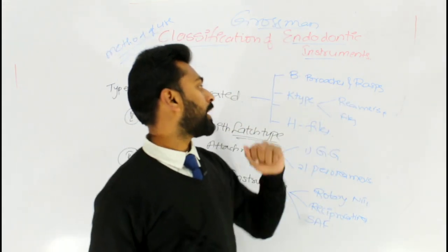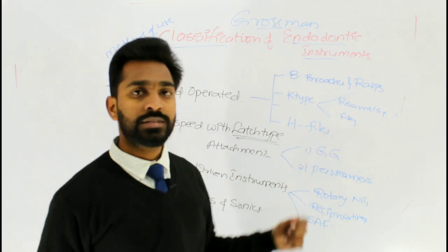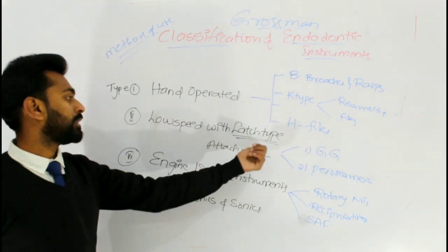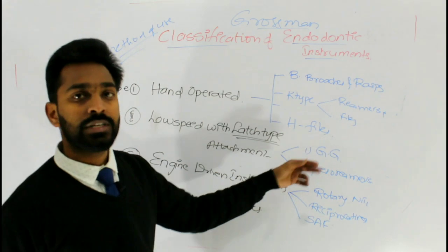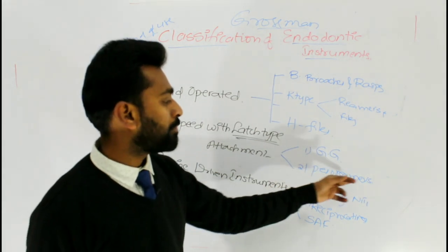You can see barbed broaches and rasps, K-type reamers and files, and H-files. Coming to the low-speed with latch-type attachment, you have GG drills or Gates-Glidden drills and Peeso reamers.